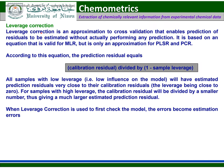Leverage correction is an approximation to cross validation that enables prediction of residuals to be estimated without actually performing any prediction. It is based on an equation that is valid for MLR but is only an approximation for PLSR and PCR. The equation is: calibration residual divided by one minus sample leverage. Samples with low leverage will have estimated prediction residuals very close to their calibration residuals. For samples with high leverage, the calibration residuals will be divided by a smaller number, giving a much larger estimated prediction residual. When leverage correction is used to first check the model, the errors become estimation errors.